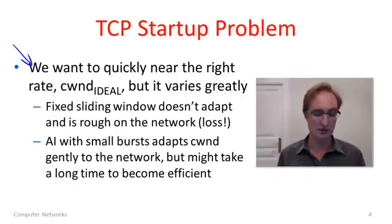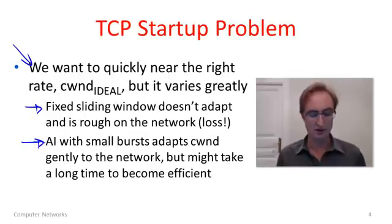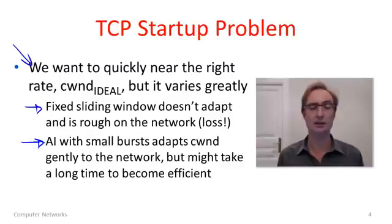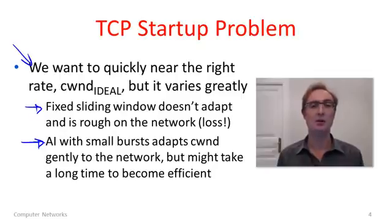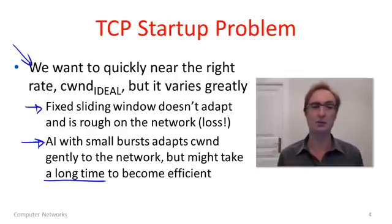Any fixed size sliding window is going to be problematic because it will either be way too small or way too large. It's also very rough on the network — it just injects a burst which can lead to queuing and packet loss. The whole reason for using a congestion window in small bursts is that we're smooth on the network. We can use additive increase with small bursts to additively grow the congestion window, giving smooth traffic at about the right congestion window. But it might take a very long time to reach the ideal window if the network requires a large window compared to the step size we conservatively choose.